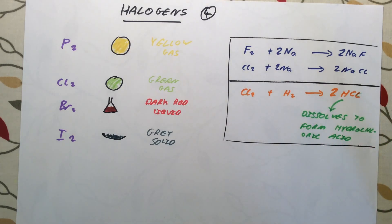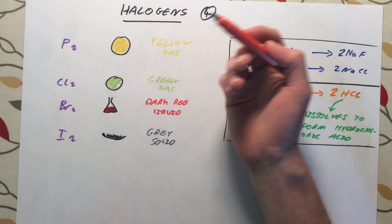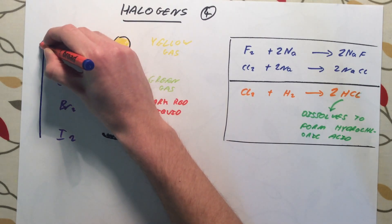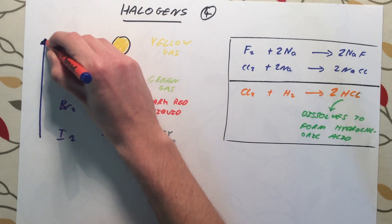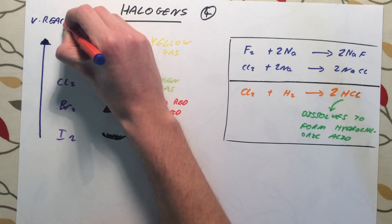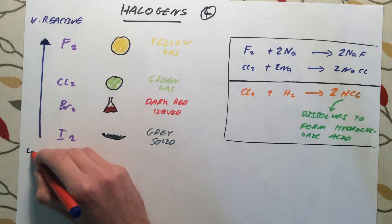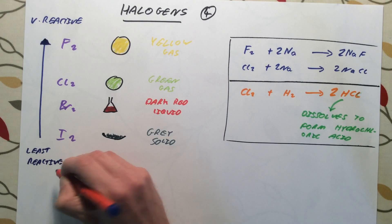The last thing we need to know is the order of reactivity of the halogens. Unlike the alkali metals, which got more reactive going down the group, the halogens actually get less reactive going down the group. So fluorine is very reactive, chlorine is still quite reactive, bromine is less reactive, and iodine is the least reactive.